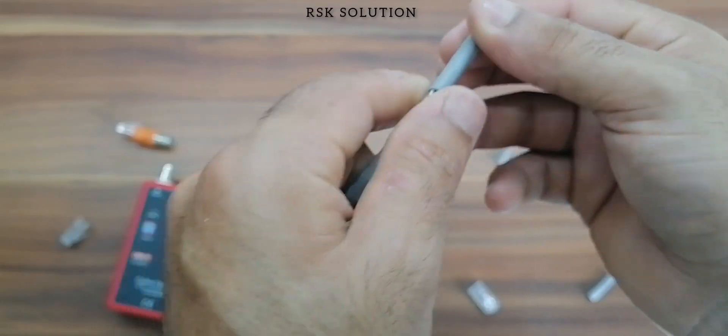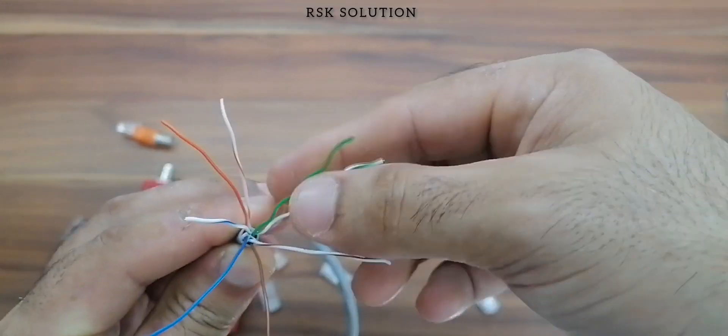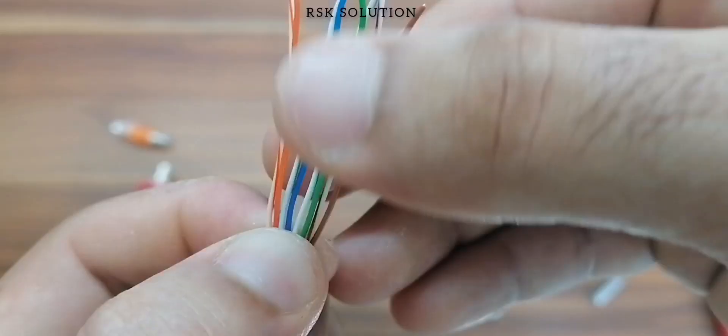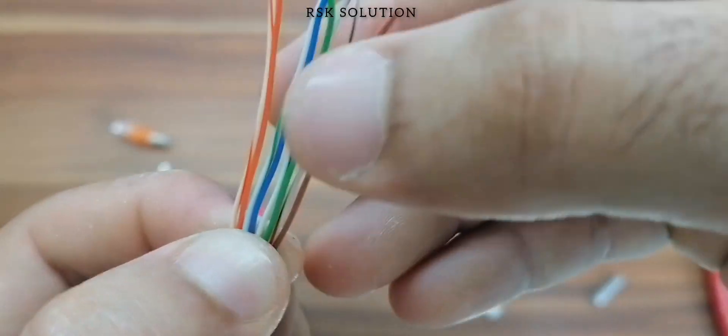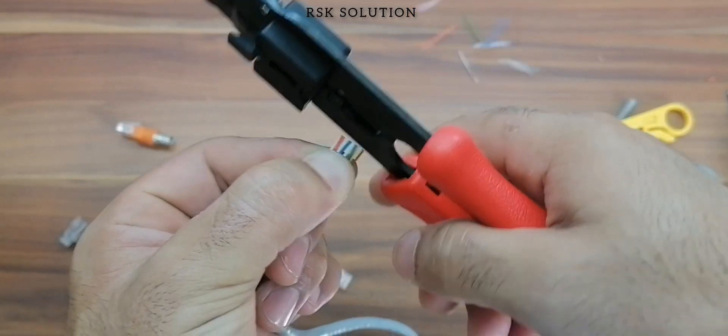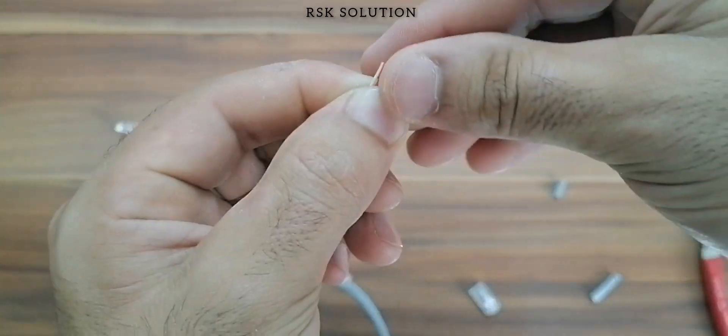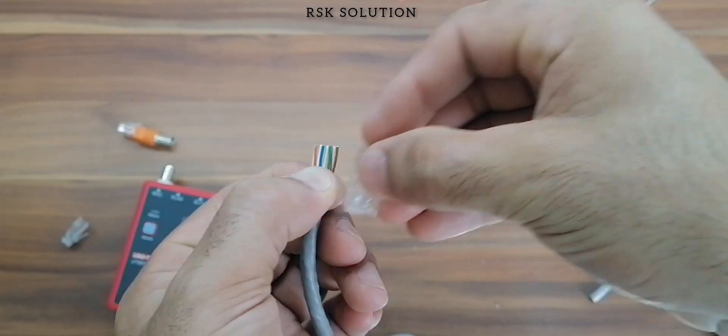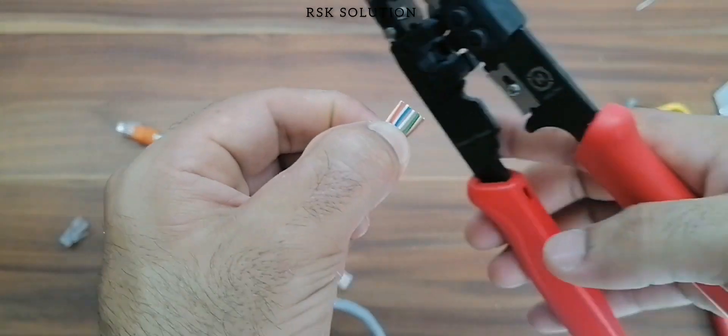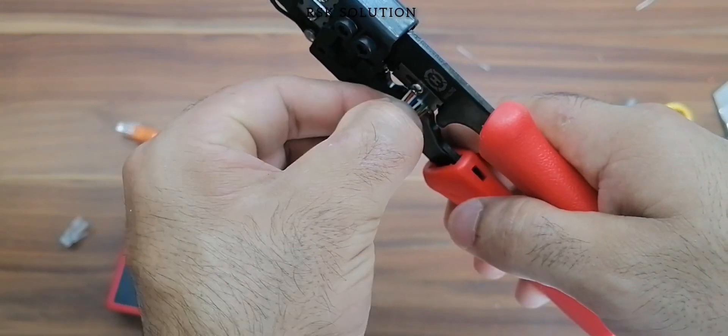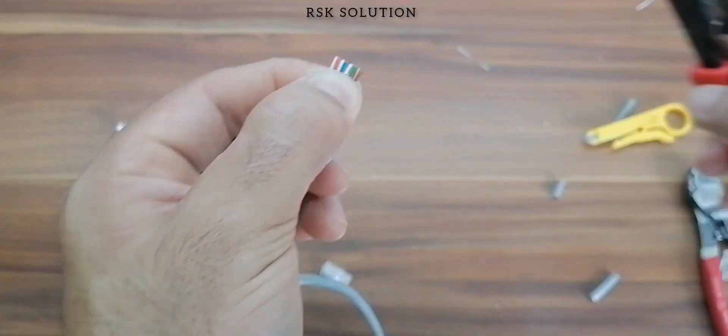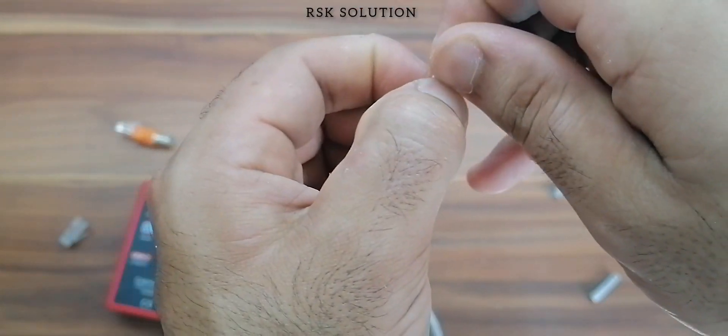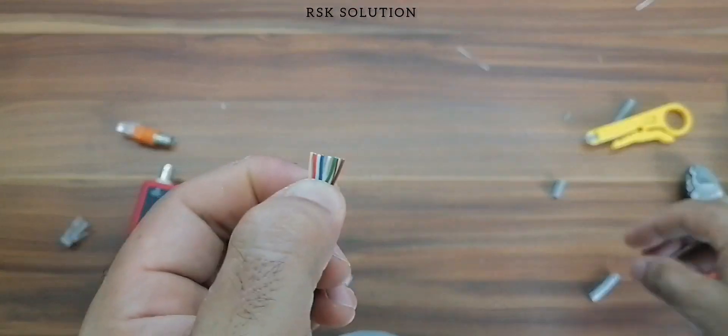Now, we are going to make another end of the Cat6, we do the same process how we did before, but now I am going to show you if the RJ45 is not pass through, how to make a connection. First cut the extra wire, then take RJ45 connector and check the size and cut the extra wire, something like this.